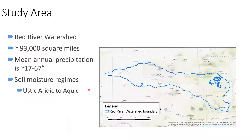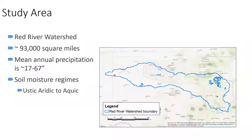Our study area is the Red River watershed, which is about 93,000 square miles. The median annual precipitation ranges from about 17 inches in eastern New Mexico to the wetter portions in the eastern part of this watershed, where we get up to 67 inches of precipitation. In terms of soil moisture regime, that translates to Ustic-Aridic or Ustic-Ustic moisture regimes in the west, all the way to Ustic and then Udic moisture regimes in the east.